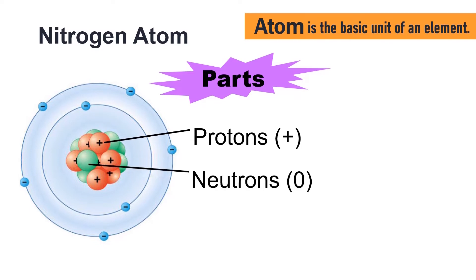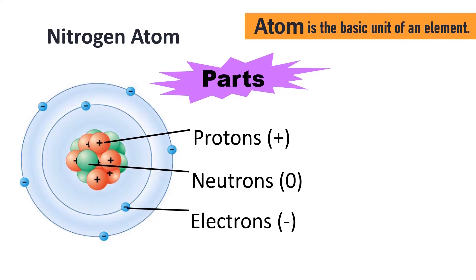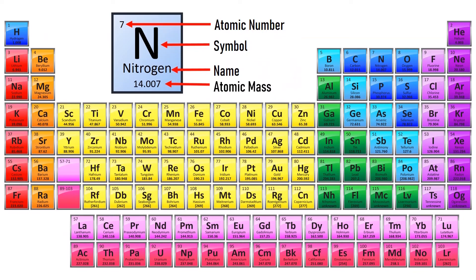neutrons, which are no charge, and electrons, which are negative charge. The atomic mass is the number of protons and neutrons. So the total number of protons and neutrons of nitrogen is 14, which is its atomic mass.